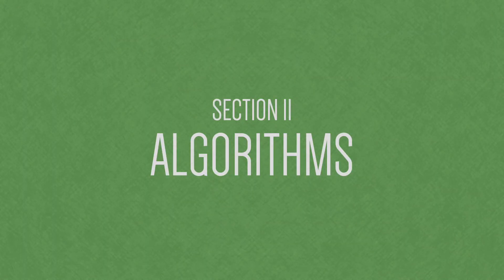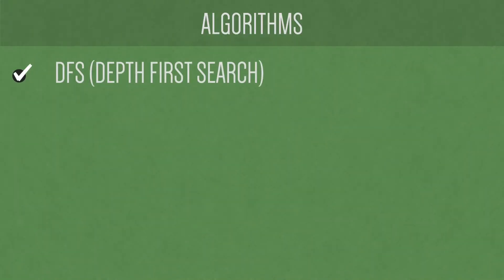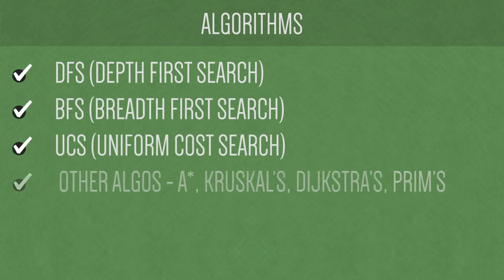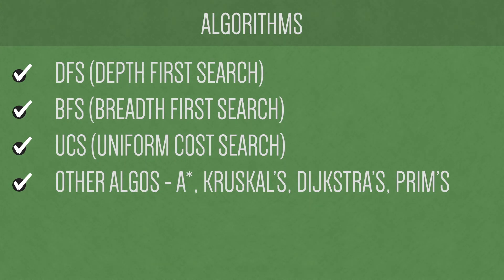Next up is algorithms. I'm primarily talking about graph search algorithms. You should know DFS or depth-first search, BFS or breadth-first search, UCS which is uniform cost search, and optionally a greedy search and A* search. It's probably more likely you'll need to know efficiencies for data structures than for algorithms, but it's a good idea to know them nonetheless. Better yet, if you can actually understand why an algorithm has a given complexity rather than just memorizing it, that's going to be a lot better.